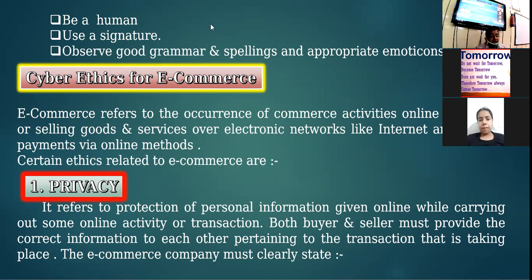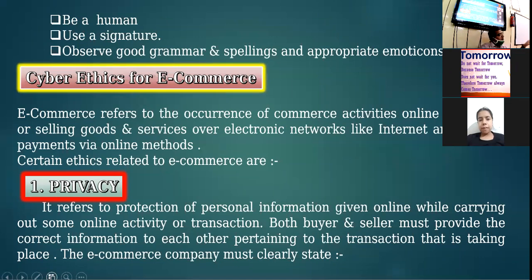While doing e-commerce, certain ethics, protocols, and rules are to be kept in mind. The first ethic is privacy. There are two parties in online shopping: the seller and the buyer. The seller should know who the buyer is, and the buyer should know who the seller is. While the transaction is in process, both parties should reveal their true identity to each other. The seller should not hide something from the buyer and the buyer should not hide something from the seller, but personal information should be kept personal.